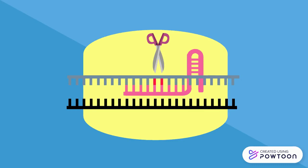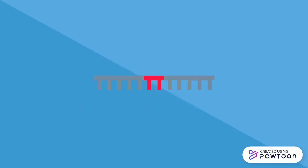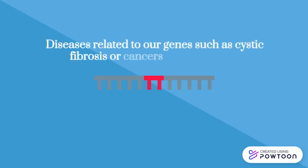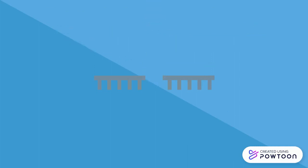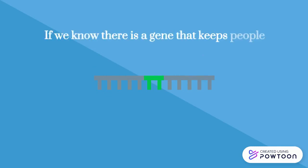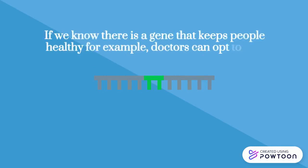For the future, this means that diseases that are related to our genes, such as cystic fibrosis or cancers, can be cut out using CRISPR. With gene editing, we can also add parts to the gene too. If we know there is a gene that helps keep people healthy, doctors can opt to add this in.